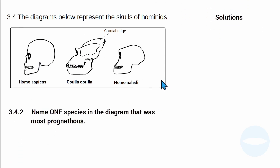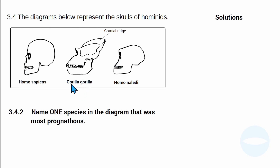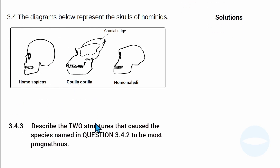The next question asks: name one species in the diagram that is most prognathous. Prognathism is the distance between the line of the eye and the end of the jaw. As we analyzed, this distance is largest in gorilla. The answer is Gorilla gorilla — it has the most prognathism, meaning the greatest protrusion of the jaws.